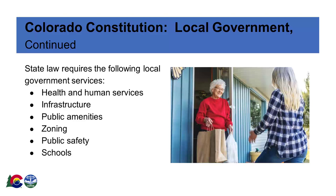The Colorado Constitution obligates counties to provide the services required by state statute, which include: Health and Human Services — including public health, child welfare, and senior care; Infrastructure — including roads, mass transportation, street lighting, and solid waste disposal; and Public amenities — such as parks and recreation, libraries, cemetery districts, tourism, zoning authority, including county planning commissions and housing authorities.